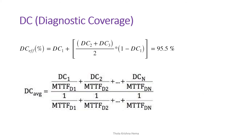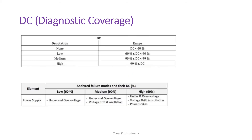The formula for diagnostic coverage effective in percentage is: (DC1 + DC2 + DC3) / (2 × (1 − DC1)), with a sample value of 95.5%. The DC average formula is: (DC1 / MTTF_D1 + DC2 / MTTF_D2 + ... + DCn / MTTF_Dn) divided by (1/MTTF_D1 + 1/MTTF_D2 + ... + 1/MTTF_Dn).